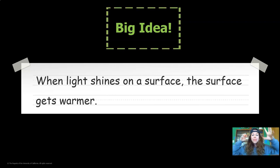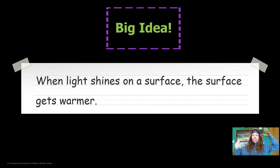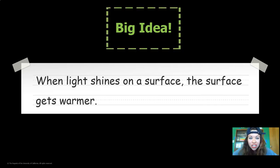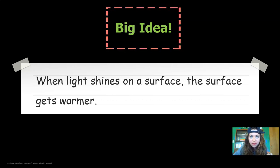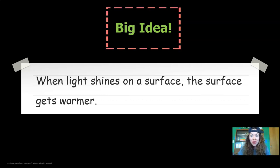Here's our big idea — our big, humongous, giant, mega idea: when light shines on a surface, the surface gets warmer. Do we have evidence to prove our big idea is true? We made a model, and we went outside and did an investigation. Those are all things that scientists do to prove their big ideas.